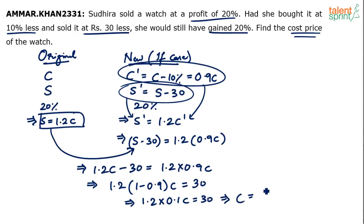So C is equal to 30 into 10. I mean I am multiplying both sides by 100. So what happens? This is like 300 by 12. 300 by 12 is 25. 25 tens is 250. So the cost price is 250. That's your answer.